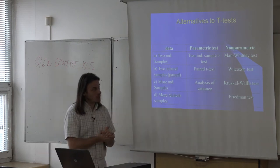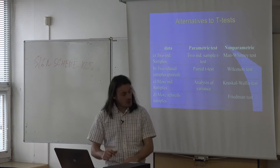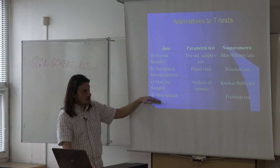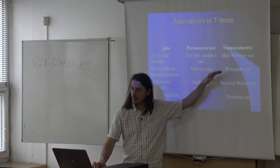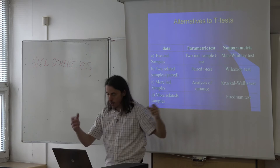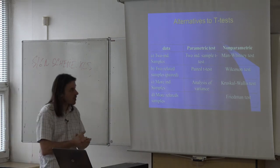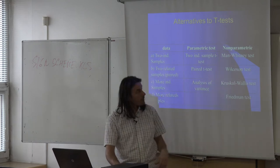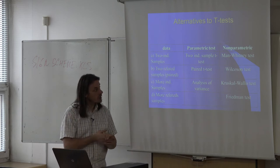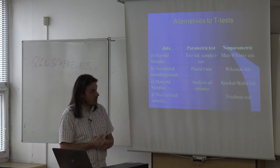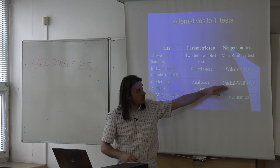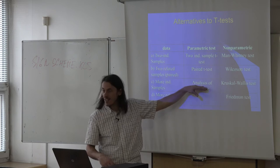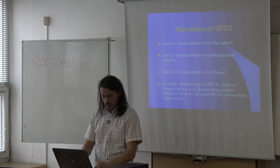There are also special tests for two or more related samples — these are called Wilcoxon and Friedman tests. We will not go through this topic; if you want to know more, read the textbook and try the included examples. I would like to show you a simple example for the Kruskal-Wallis and Mann-Whitney tests as alternatives to the two independent sample t-test and analysis of variance.